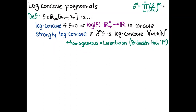We say it's strongly log-concave if not only f, but all of its partial derivatives with respect to any number of variables, also have this log-concavity property. Their derivatives will still have non-negative coefficients, so this again makes sense. With a homogeneity assumption, this class of polynomials has many names — one of them is Lorentzian, introduced by Peter Brändén and Junhe in 2019.